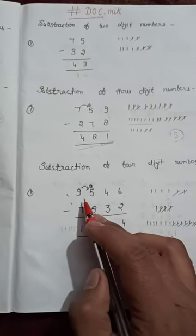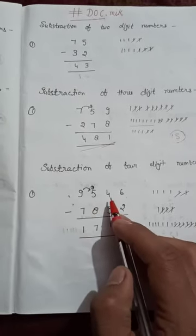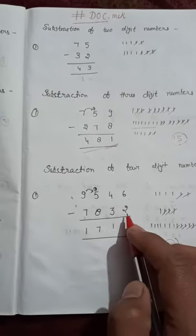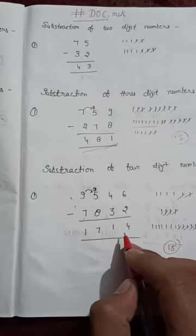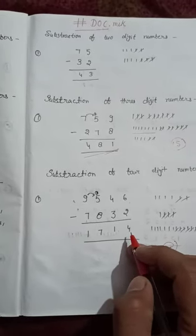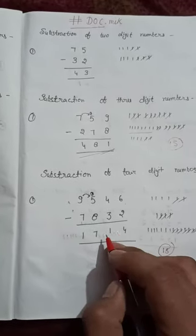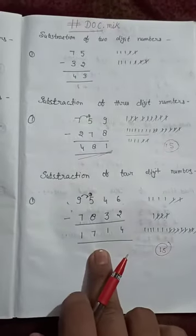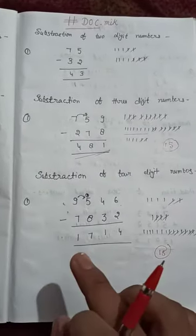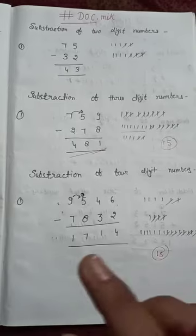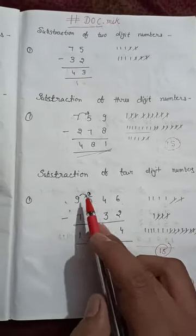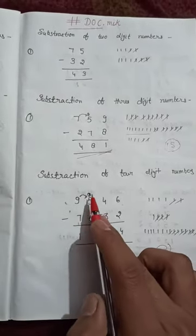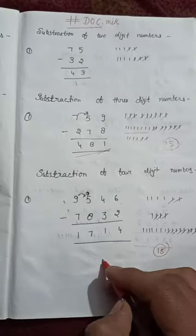So when we subtract 9546 minus 7832, what we get? 1, 7, 1, 4. We remain the number 1714. So please do it on your work paper and very carefully in this part. Thank you so much.